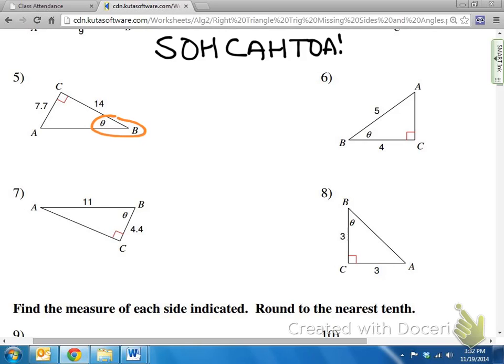So from angle B, we'll label our sides. 7.7 is on the opposite side of the angle, 14 is on the adjacent side, and the side I have no idea what number it is, is the hypotenuse.